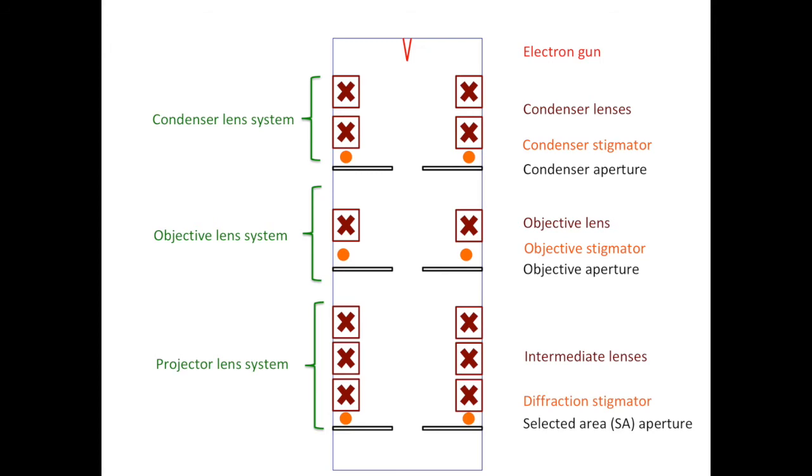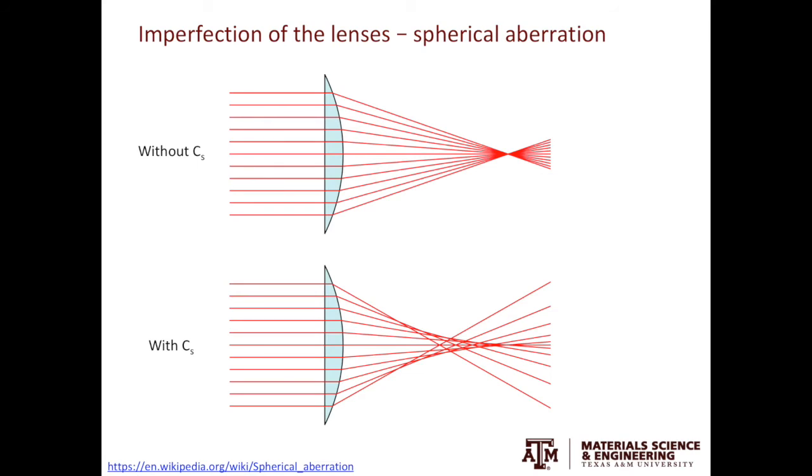The second type of the lens imperfection is the spherical aberration. In the ideal lens system, all the parallel rays should converge to just one focal point. However, for a lens with the spherical aberration, the focal point depends on how far the ray is from the center axis or the optical axis of the lens. With spherical aberration, there is no single focal point which leads to the smearing of the image.